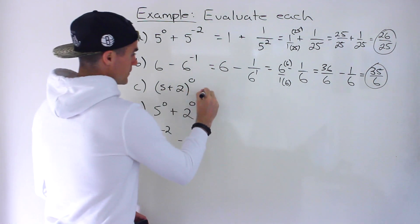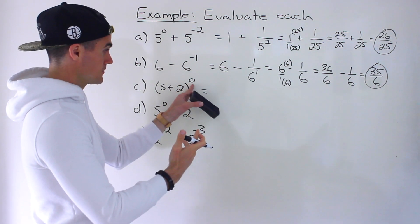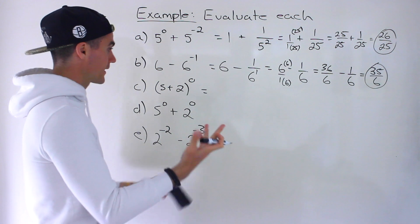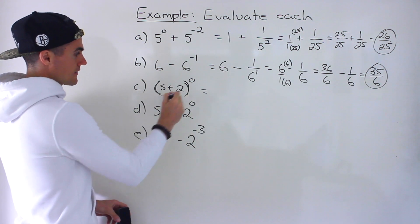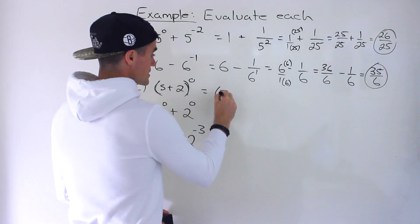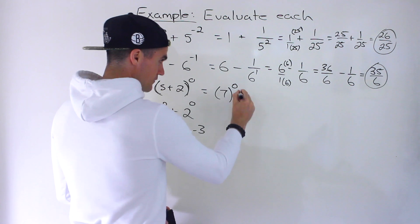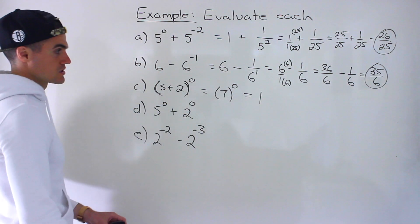Moving on to part C, we got 5 plus 2 in brackets to the power of 0. Now, before exponents, in BEDMAS, we got to work with brackets. So we actually have to evaluate this portion first. And then within the bracket, there's addition. So we'd have 5 plus 2, which would give us 7. And then we'd have it to the power of 0. Anything to the power of 0 is just 1.